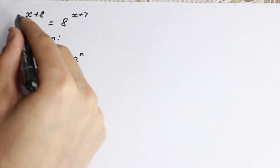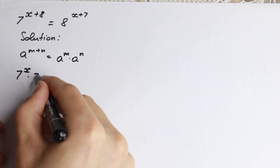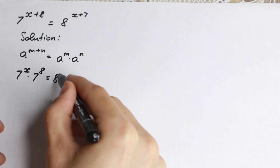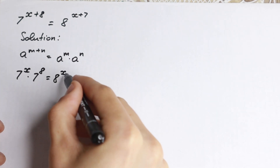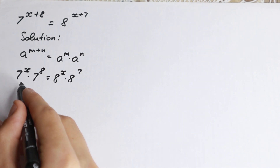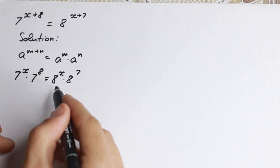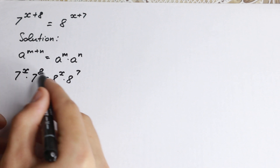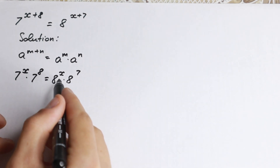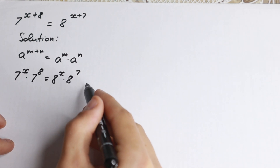The first step: we will have 7 to the x times 7 to the 8th power equal to 8 to the x times 8 to the 7th power. After applying this rule, we have x on the left and x on the right.